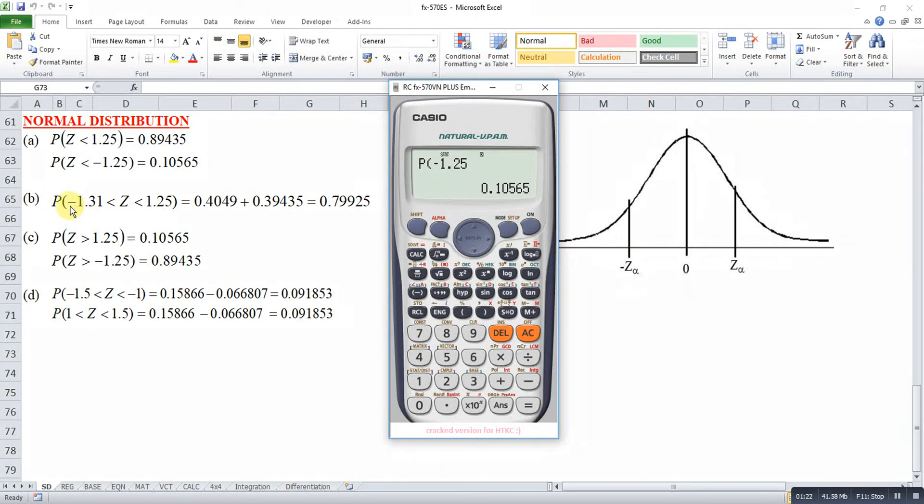Then for the second one, we want from a negative to a positive value. A negative z-score to a positive z-score. So this actually means that we want a negative z-score to 0, then 0 to a positive z-score. So for this time, we will use Q.